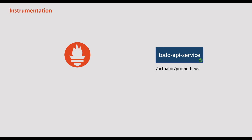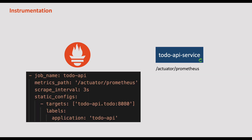Once we expose these metrics over an endpoint, all we need to do is configure Prometheus to scrape this endpoint every n seconds. Prometheus starts pulling metrics from our application every n seconds. Let's see this in practice, starting with instrumentation.